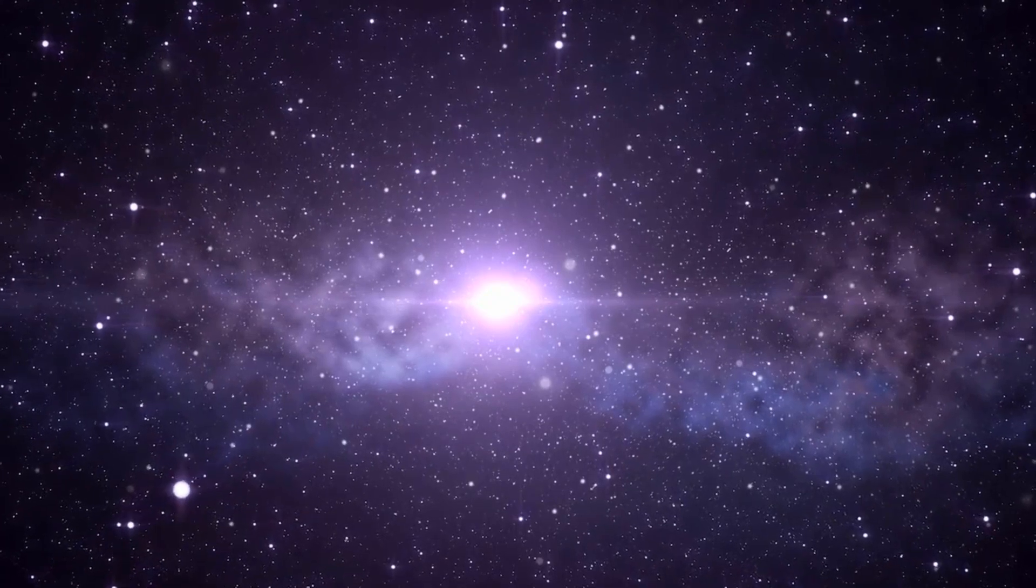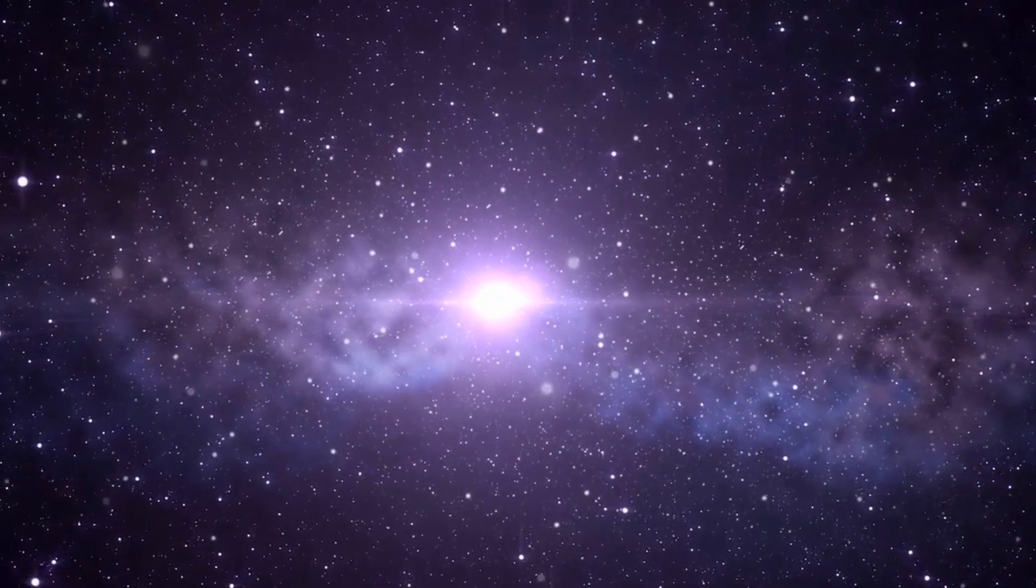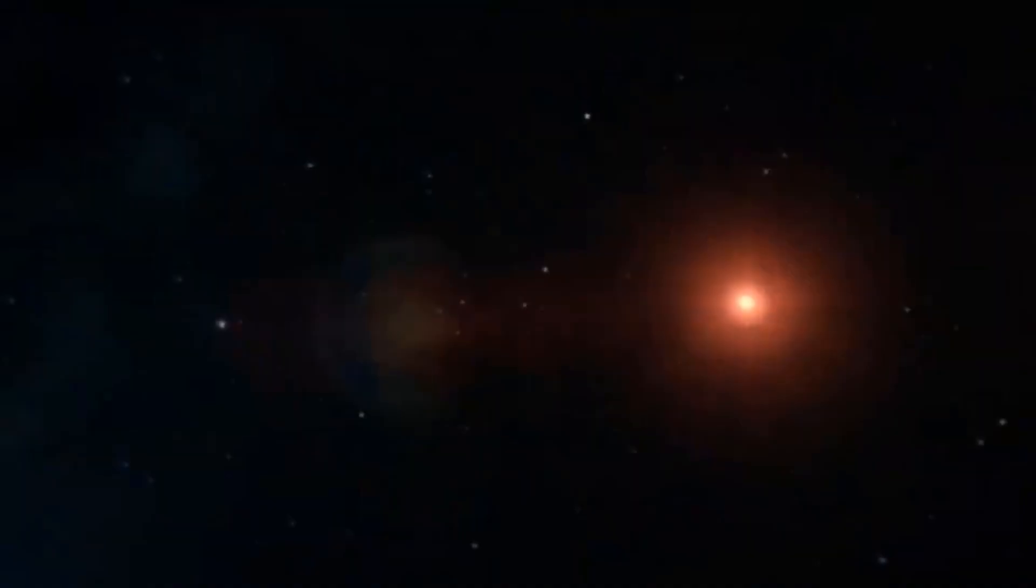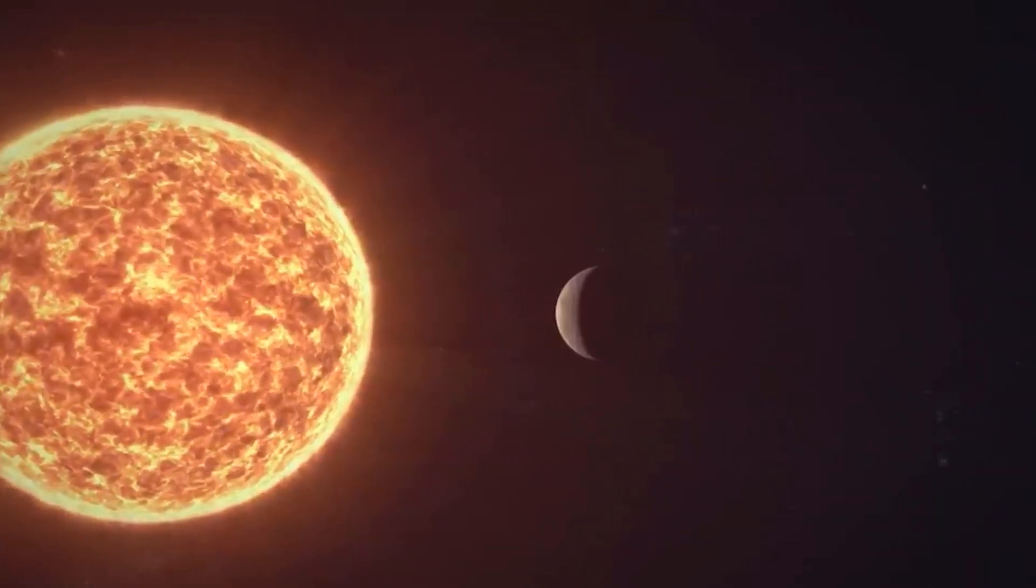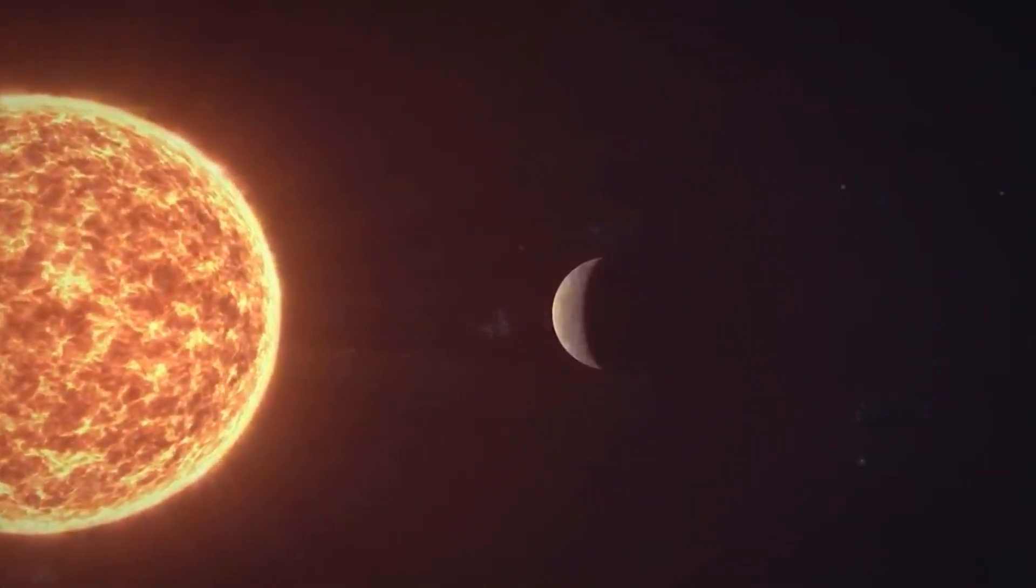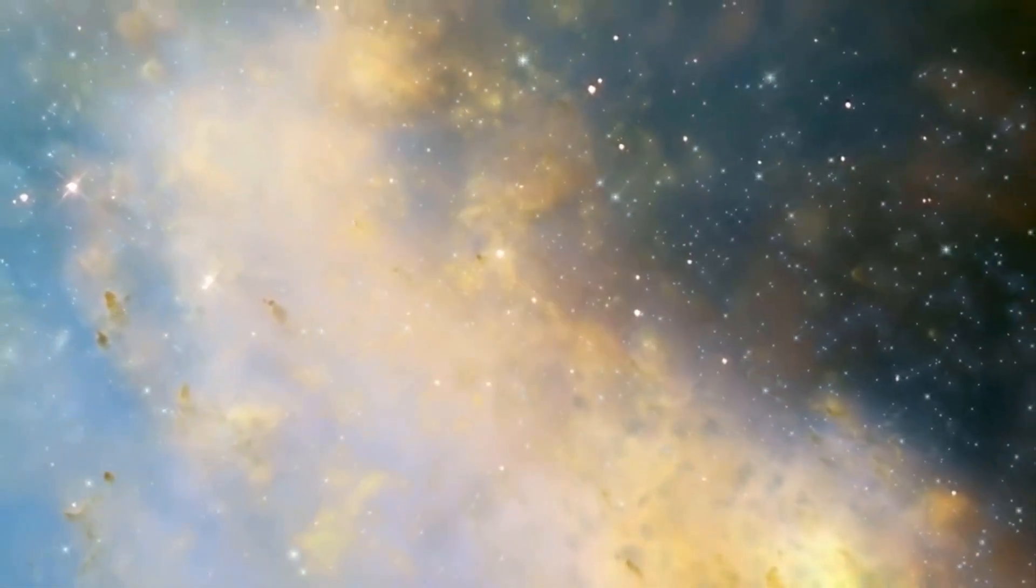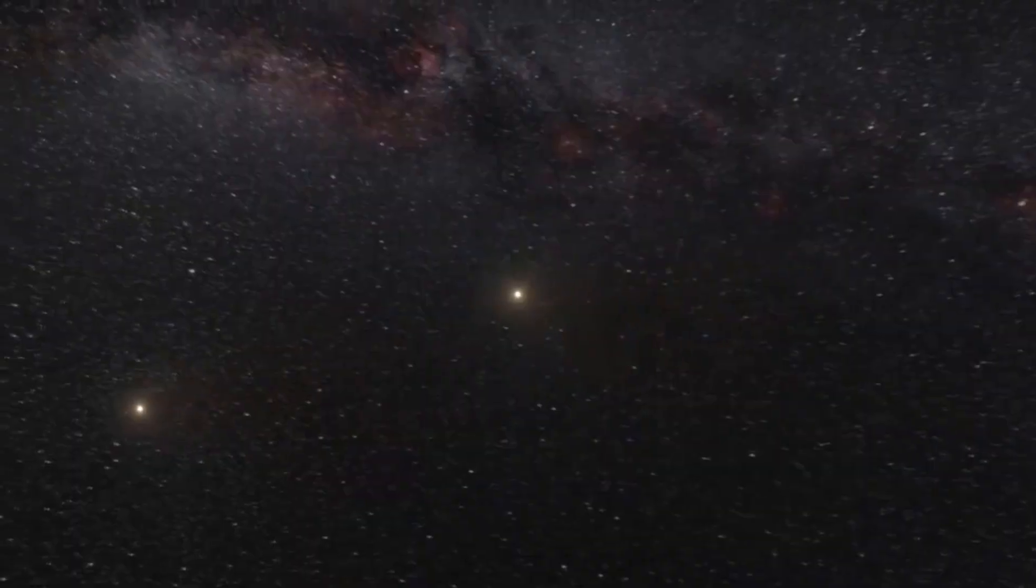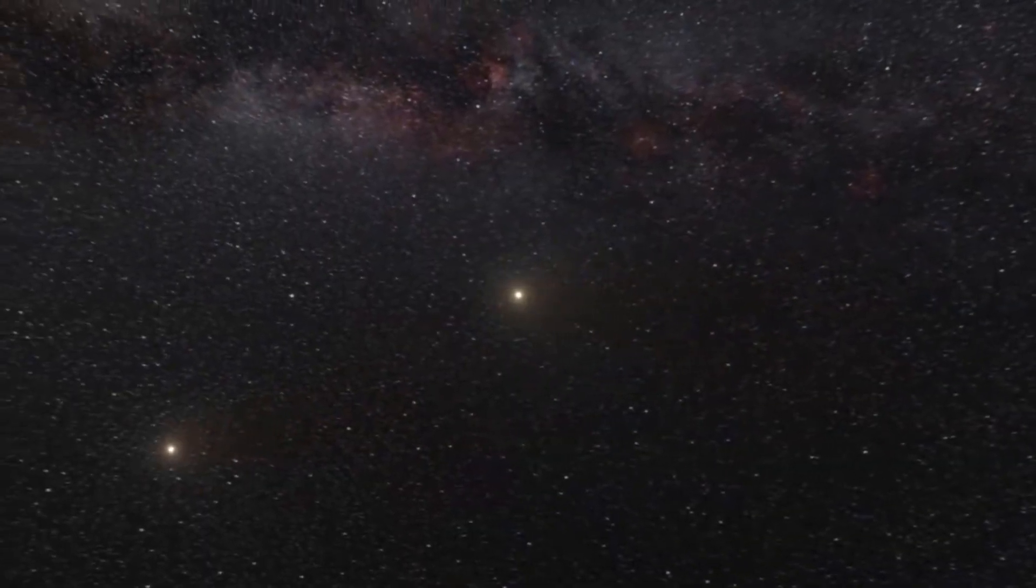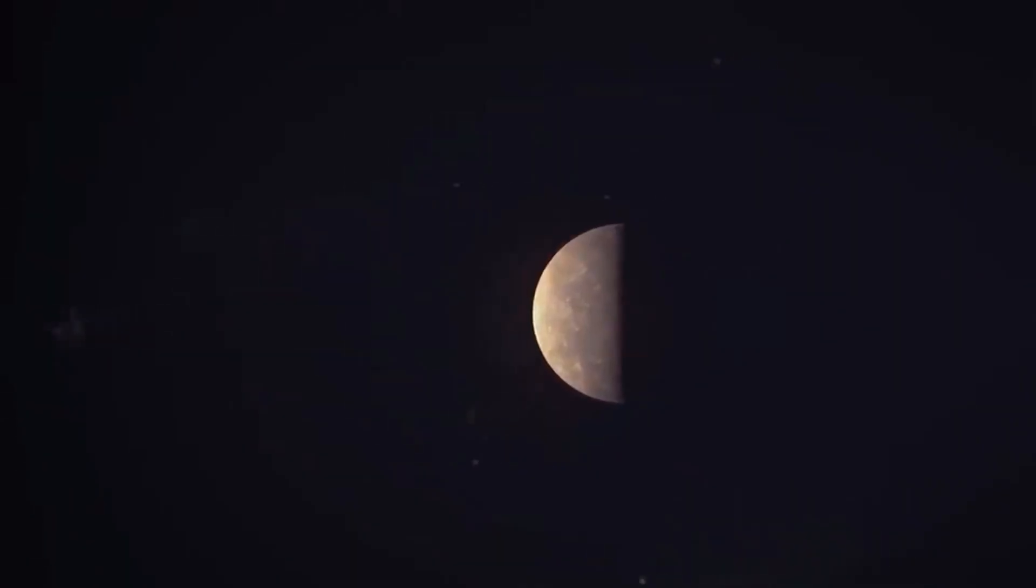Additionally, observations show Proxima Centauri may have a rocky planet orbiting around it. The small red star is about one-tenth the size of our Sun, so it is unlikely that its orbiting planet contains any life. This planet is named Proxima B, and its estimated mass is at least 1.3 times that of the Earth. Although the planet orbits around the habitable zone of the star, studies have confirmed that it does not have an atmosphere similar to Earth.